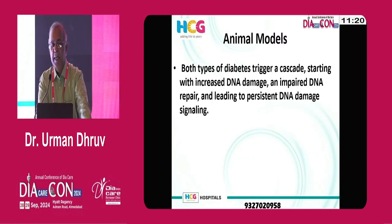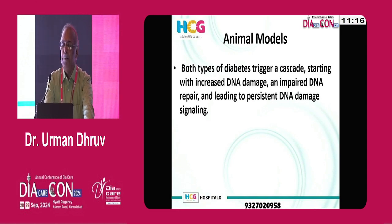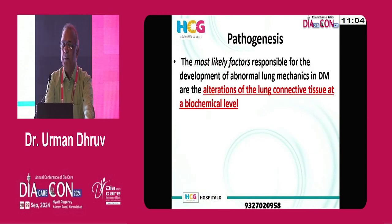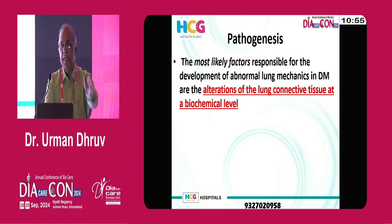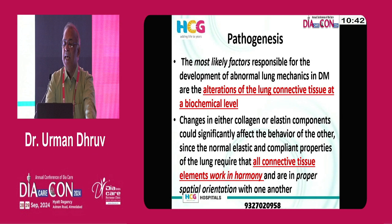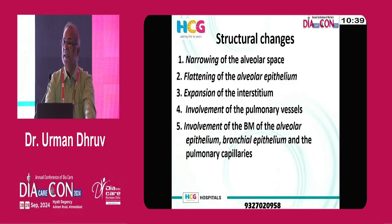The pathogenesis starts with DNA damage and impaired DNA repair, ultimately leading to persistent DNA damage. That leads to senescence — the death of the cell — marked by release of pro-inflammatory cytokines, and that leads to fibrosis. Apart from microangiopathy, there is simultaneous involvement of lung connective tissue, which forms the framework of lung elasticity. Once diabetes sets in, all connective tissue starts working in disharmony, leading to multiple structural changes noted across global studies.